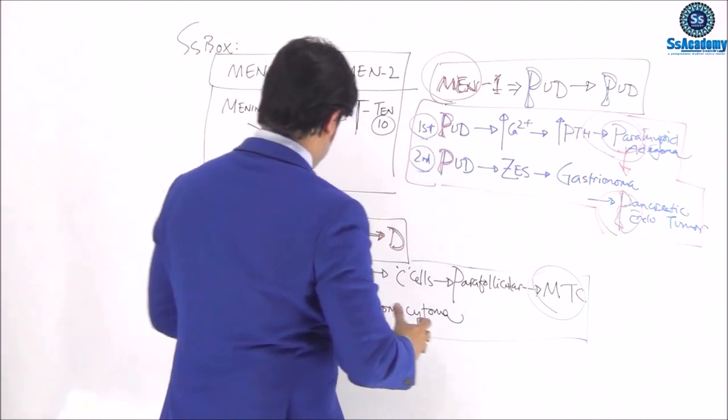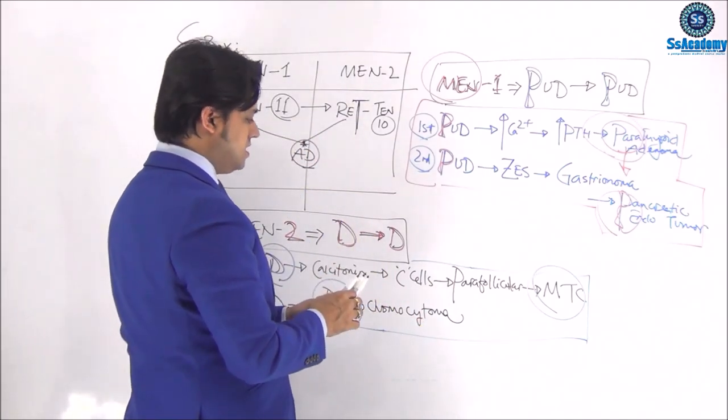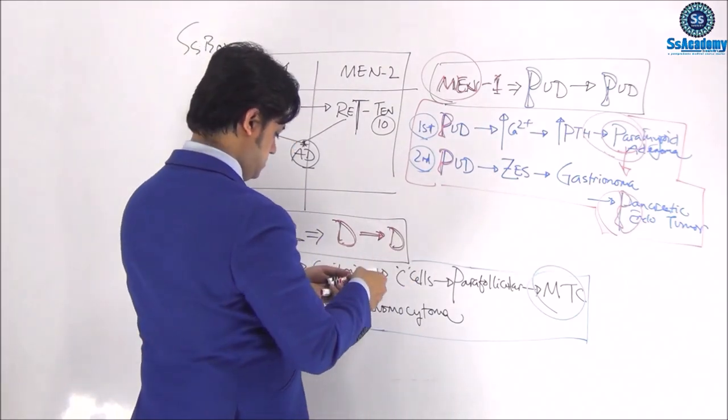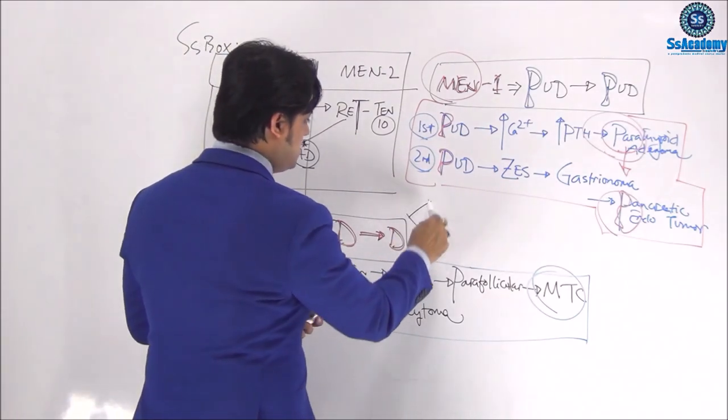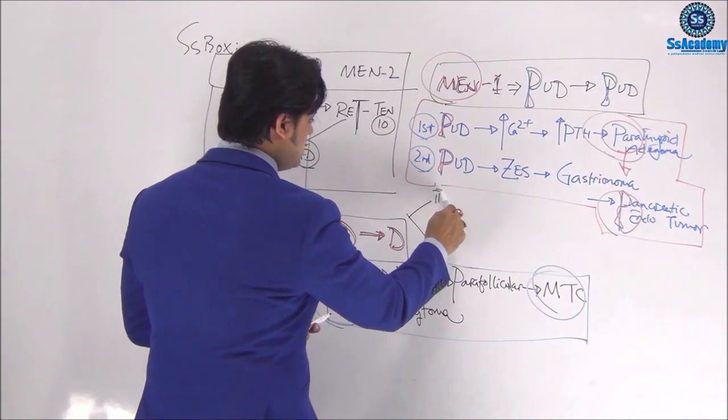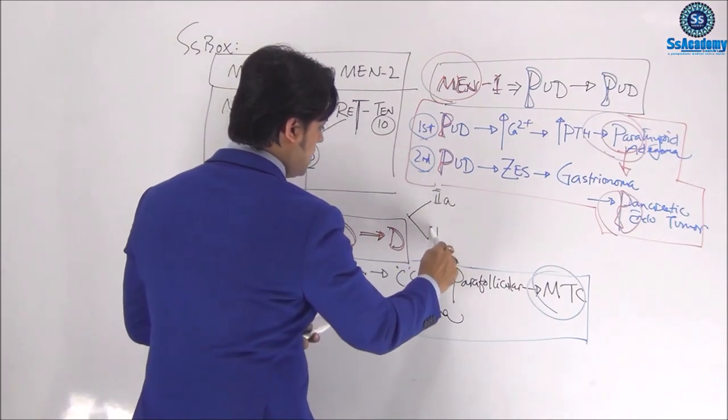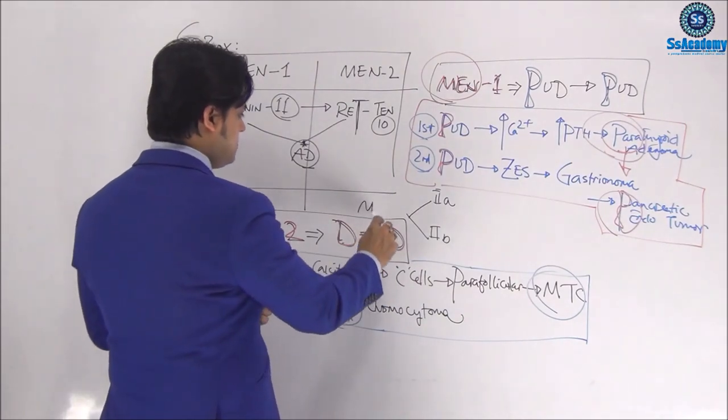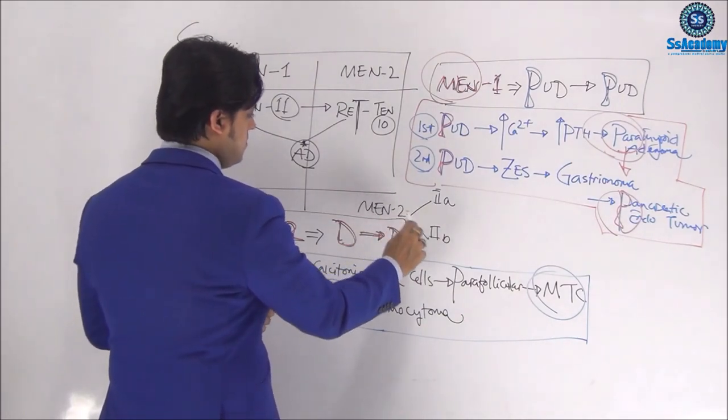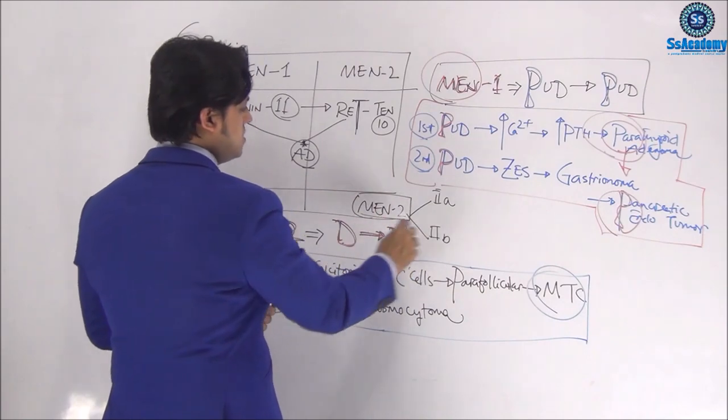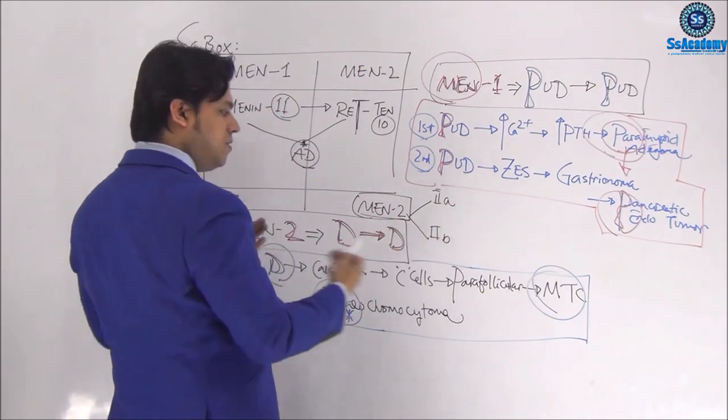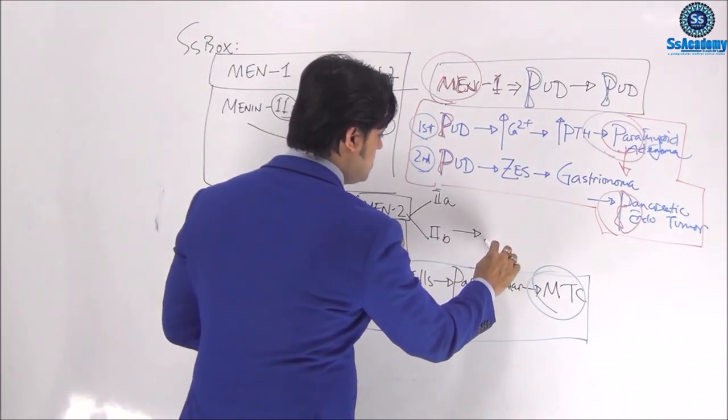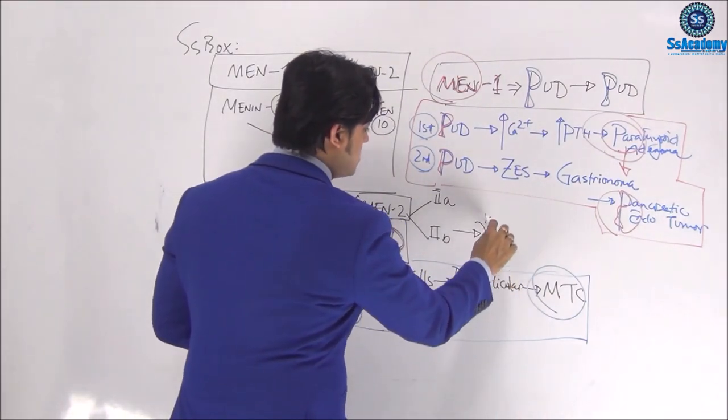Typical presentation that we need to remember, first step and then the second step. And MEN type 2, having also a classified, multiplied into the two varieties. Means type 1, type 2A, and type 2B. MEN type 2A and type 2B, both are common, right? The features are common. But the type 2B have an 2M extra.